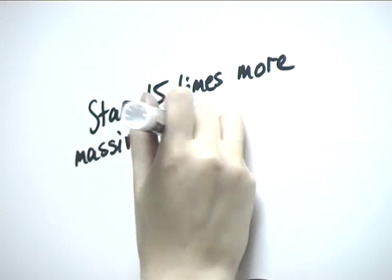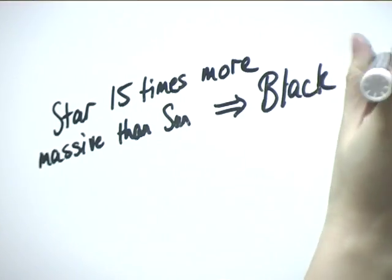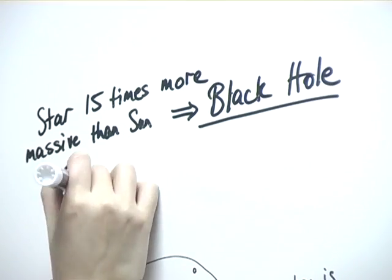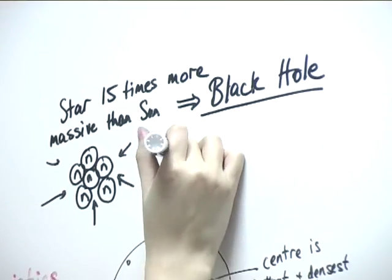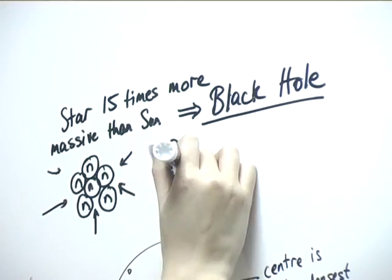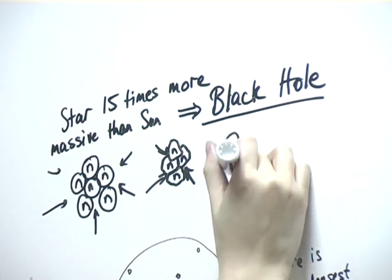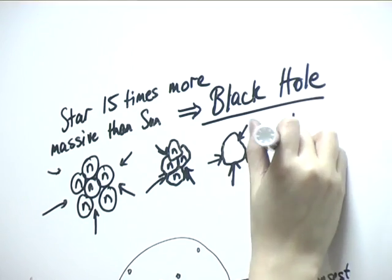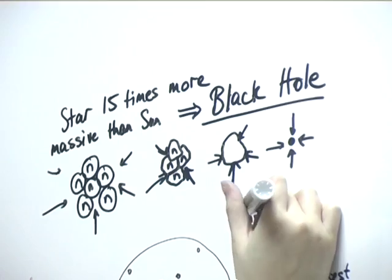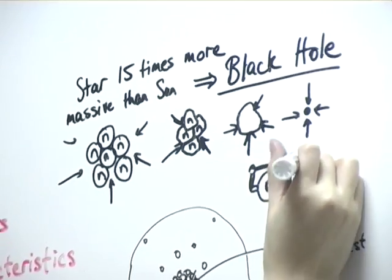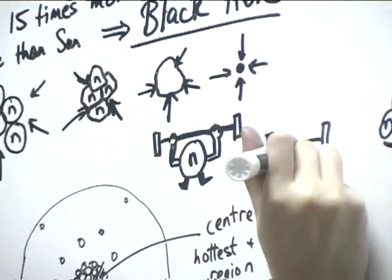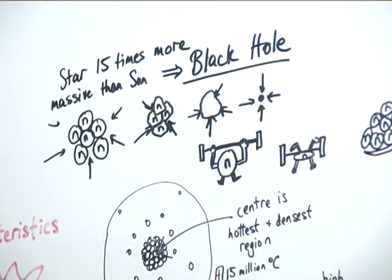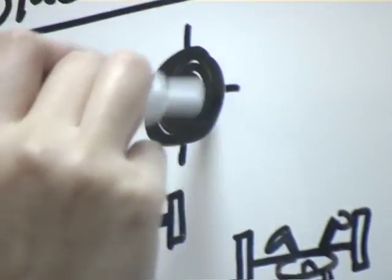A black hole is formed instead of a neutron star if the star was approximately 15 times more massive than the Sun. The collapse of the star would be so great that not even neutrons can withstand the high pressures. The core collapses into a singularity forming a black hole. It is so dense that not even light can escape its gravitational pull. As nothing can travel faster than light, nothing can escape the pull of a black hole.